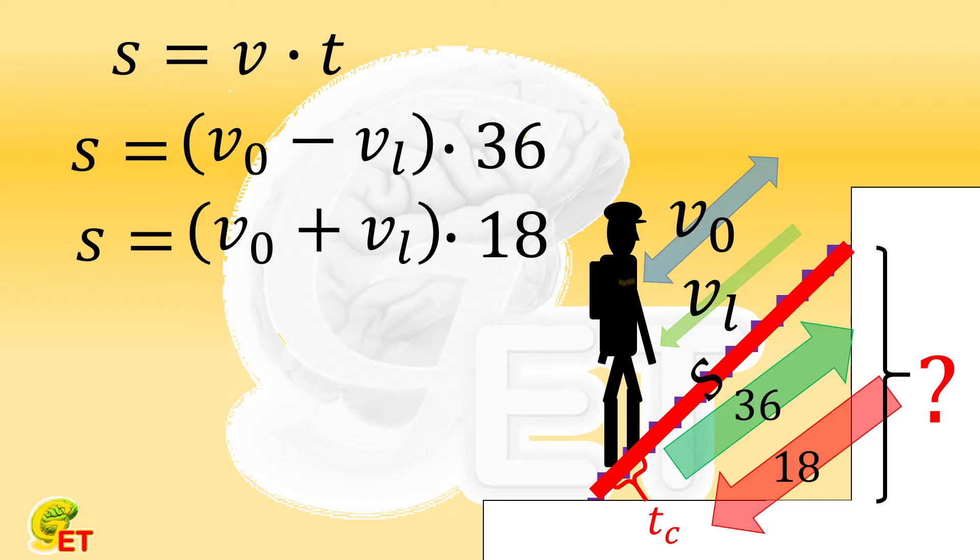If the escalator does not move, the distance is equal to Mr. Get's own speed multiplied by another time. And this time is the number of steps required to walk up the floor as asked in the question.